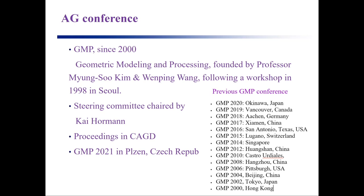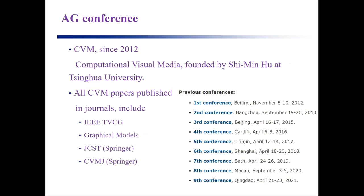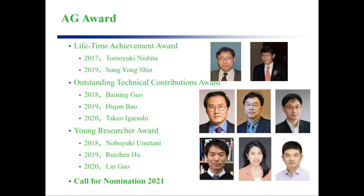You can see from previous conferences that before 2014, GMP was held every two years, not every year. But after 2015, it became an annual conference. The third conference under Asia Graphics is CVM, since 2012. It started in 2012 at Tsinghua University, and all CVM papers are published in four journals, including IEEE TVCG, Graphical Models, CGST, and CVMJ. This year we have already organized the ninth conference, and next year CVM will come back to Tsinghua, Beijing, where we will have a 10-year celebration.